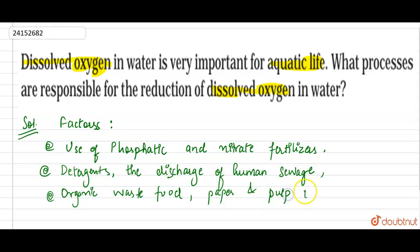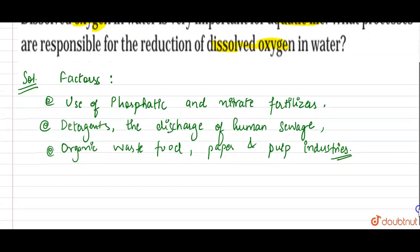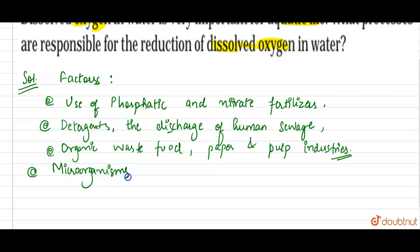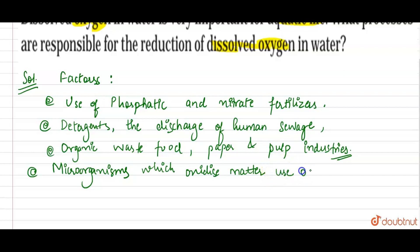These factors are responsible for reducing dissolved oxygen in water because microorganisms, which oxidize organic matter, also utilize the oxygen that is dissolved in water.